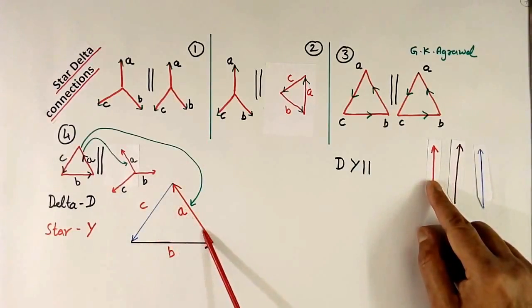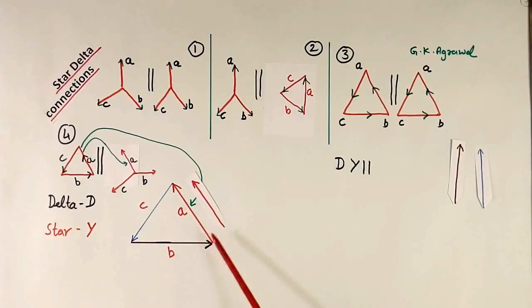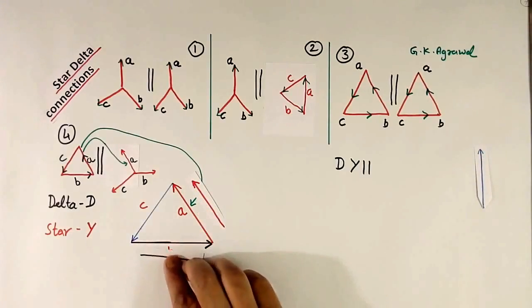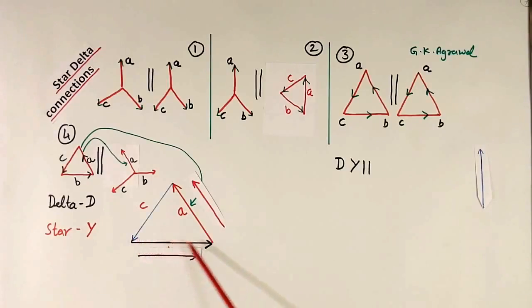Suppose this is A phase primary. This is A phase secondary. Both will have same direction. Similarly, this is B phase primary. This is B phase secondary. Both will have same direction.